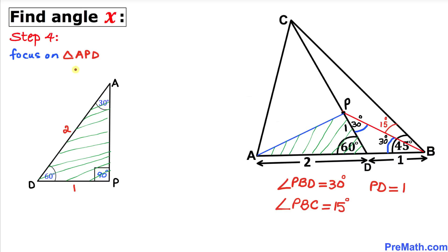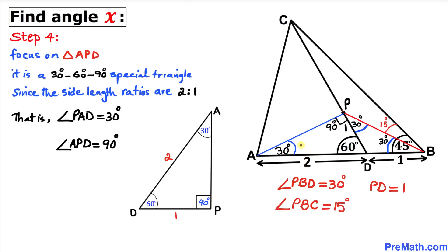Now let's focus on triangle APD. We know that one side is one unit and the other is two units. This is a special 30-60-90 triangle. Therefore angle PAD is 30 degrees and angle APD is 90 degrees.